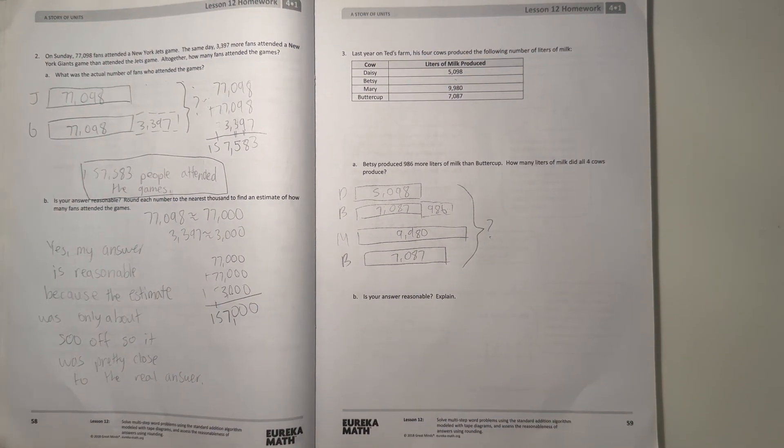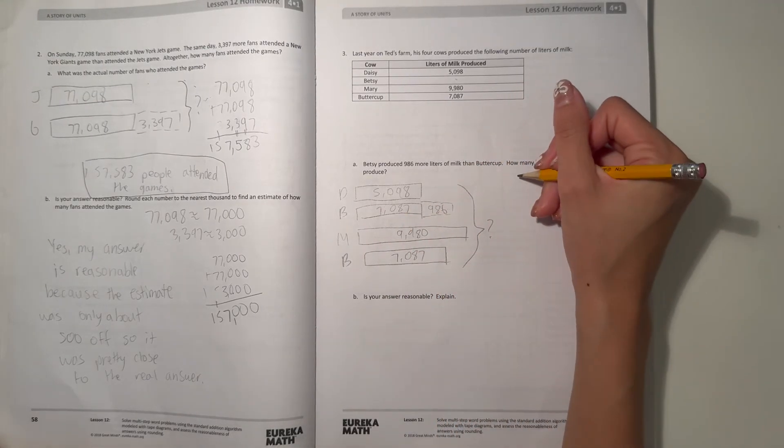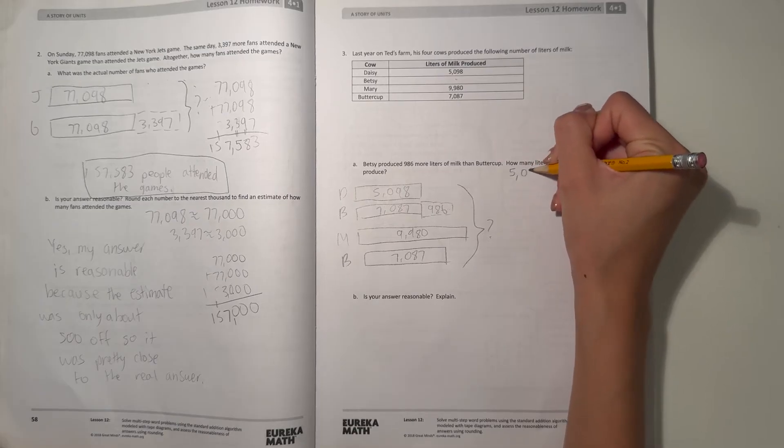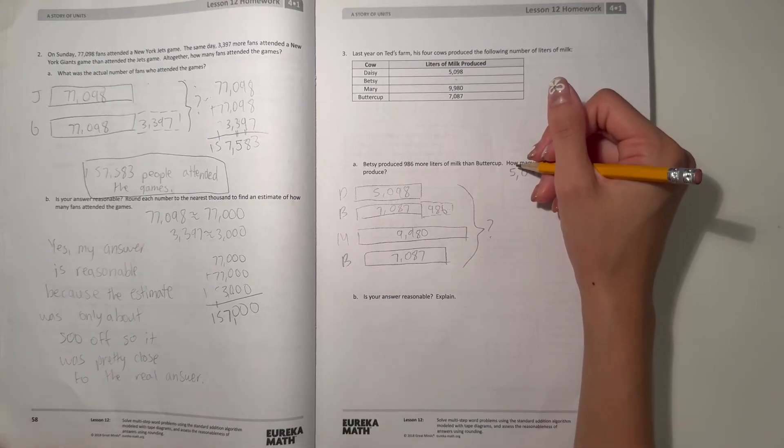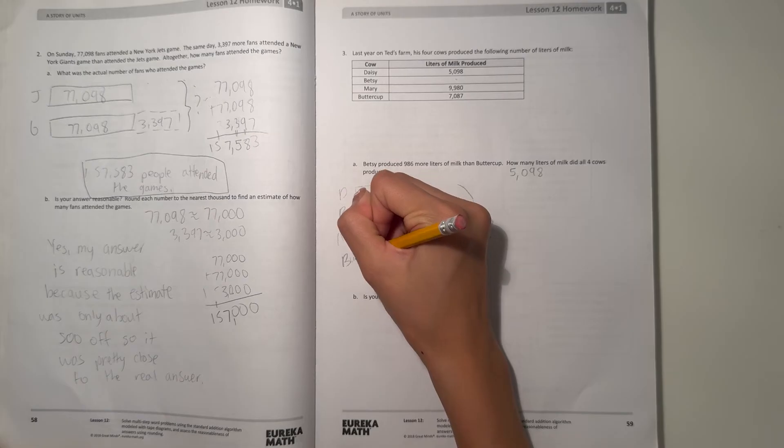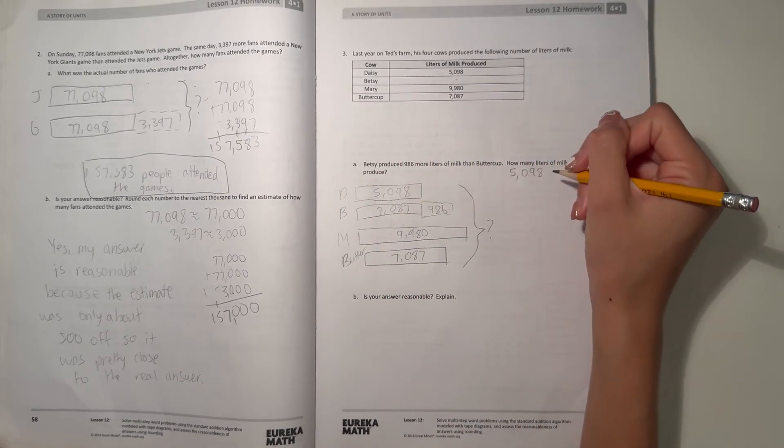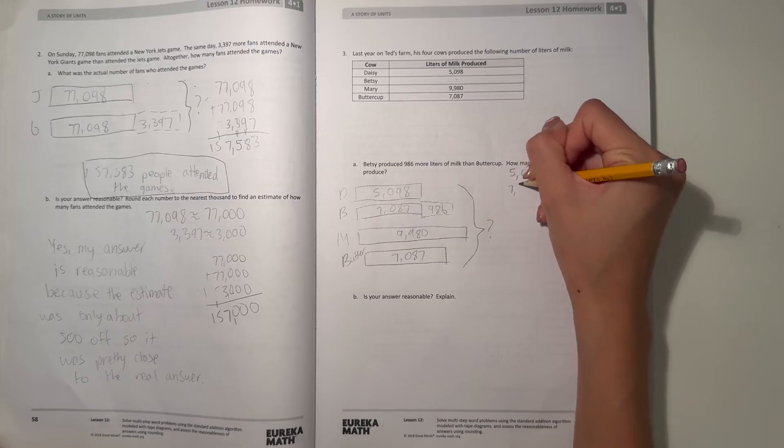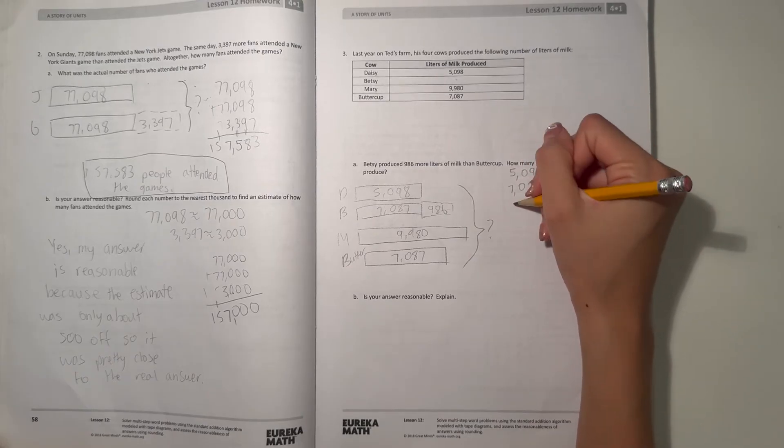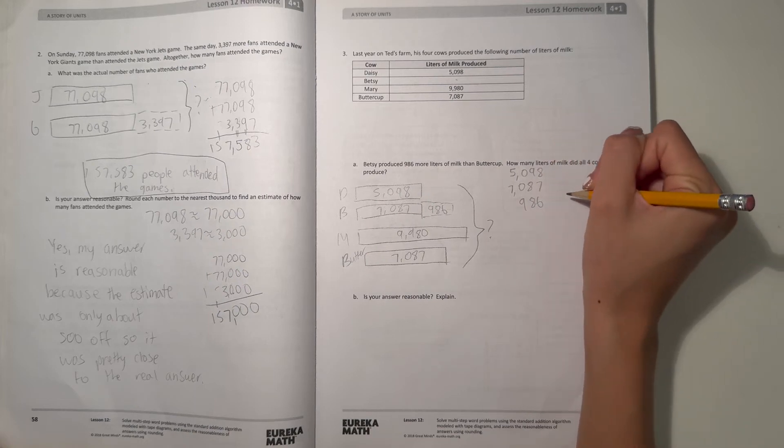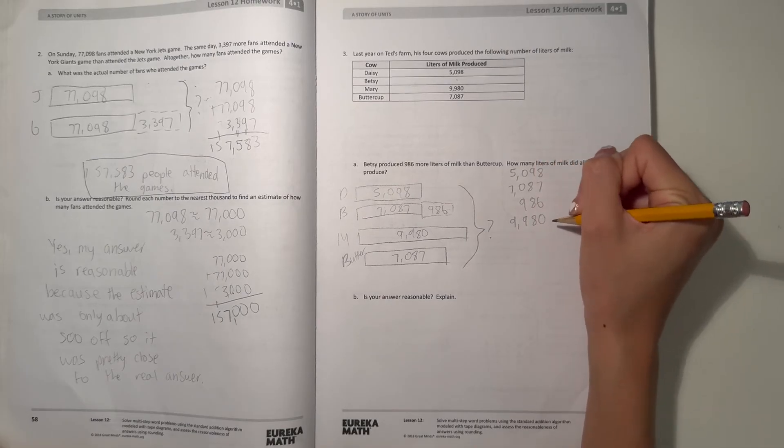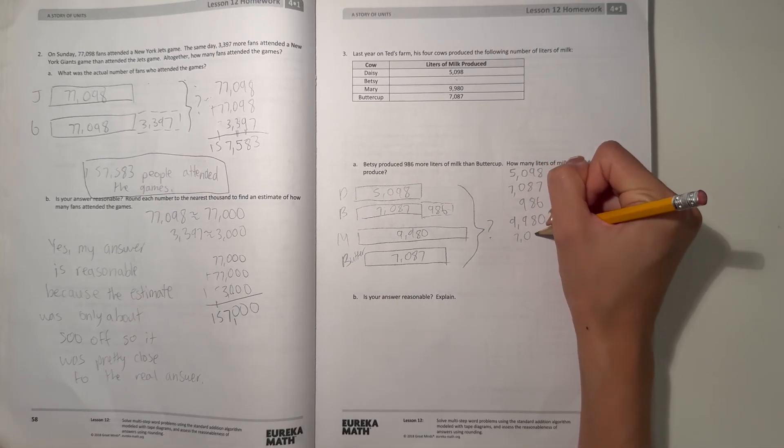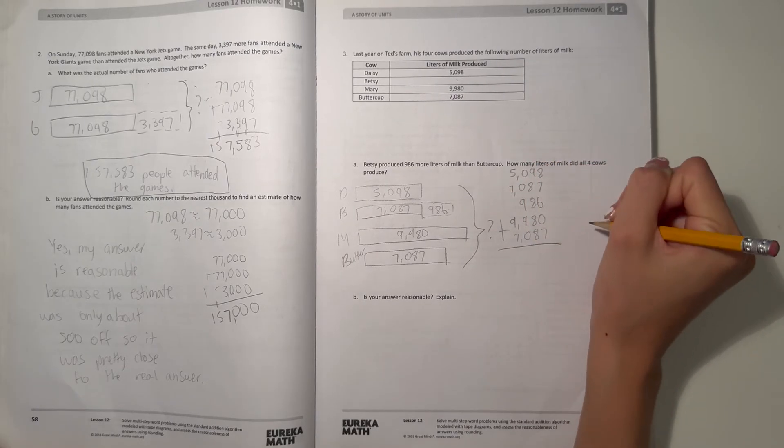We're trying to figure out how many liters they all produce. So let's first find out Betsy. We can add them all together. Daisy is 5,098. Betsy is 7,087 plus 986. Mary would be 9,980. And Buttercup would be 7,087.